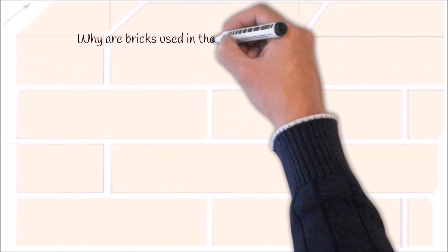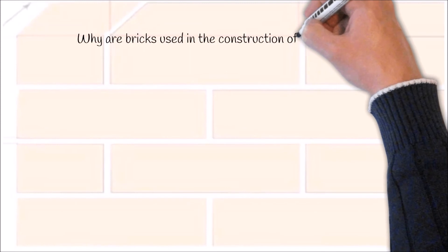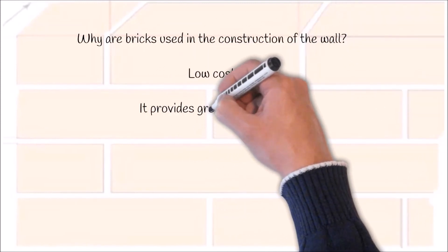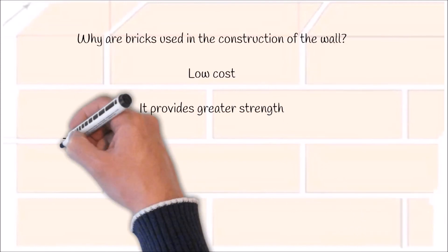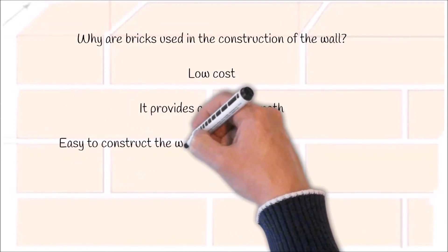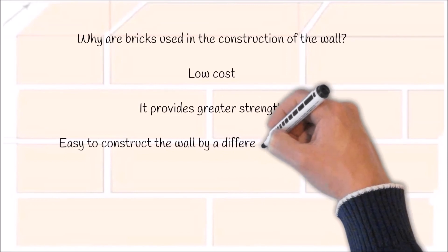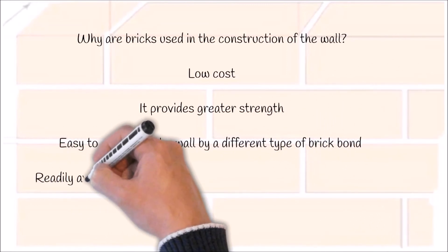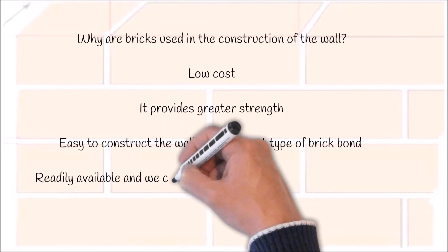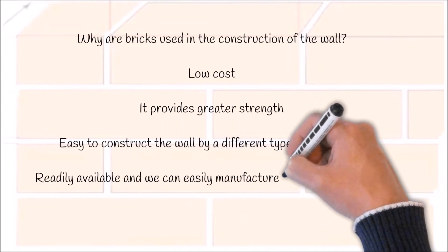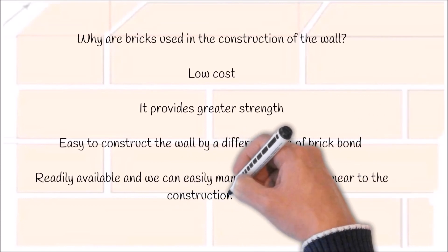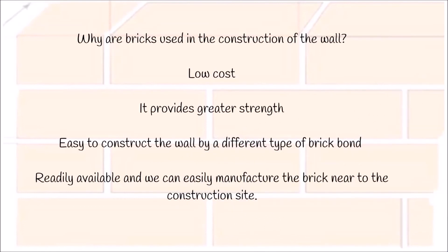Why are bricks used in the construction of walls? We can construct a wall at low cost. It provides greater strength to the wall. It is easy to construct the wall using different types of brick bonds such as English bond, Flemish bond, etc. Bricks are readily available and can be easily manufactured near the construction site.